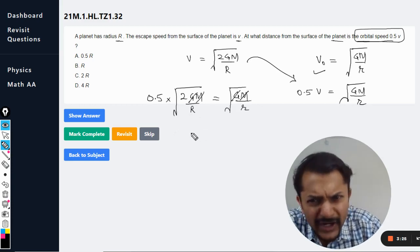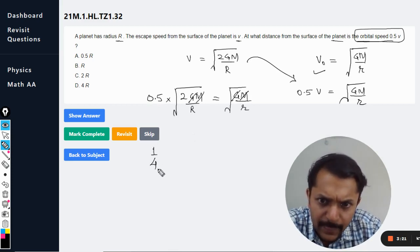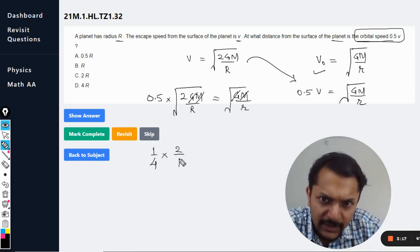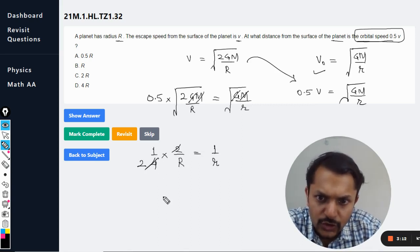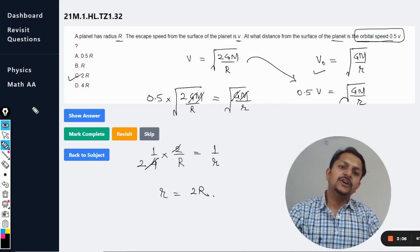Squaring both sides will be best. This becomes 1 by 4 because it is 1 by 2 squared. This will become 2 divided by R and this becomes 1 divided by small r, so it is 2. So small r is equal to twice of capital R. The answer is C.